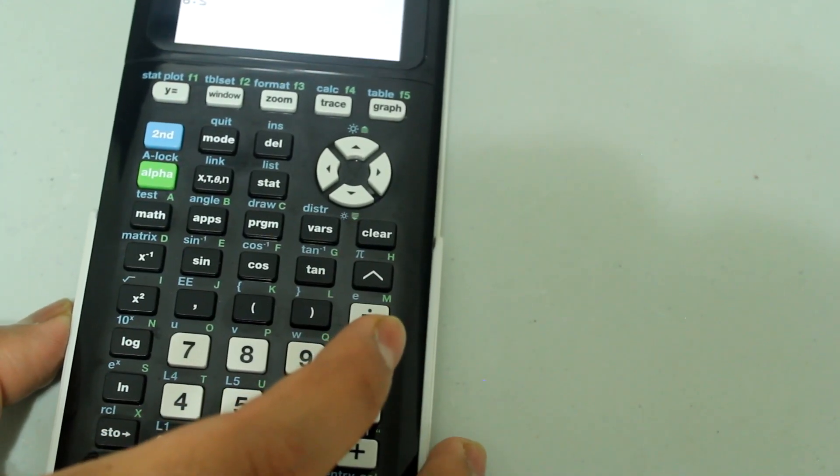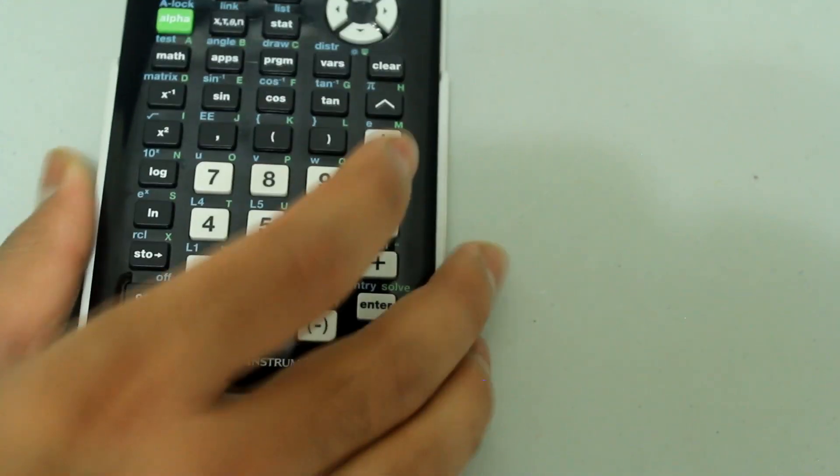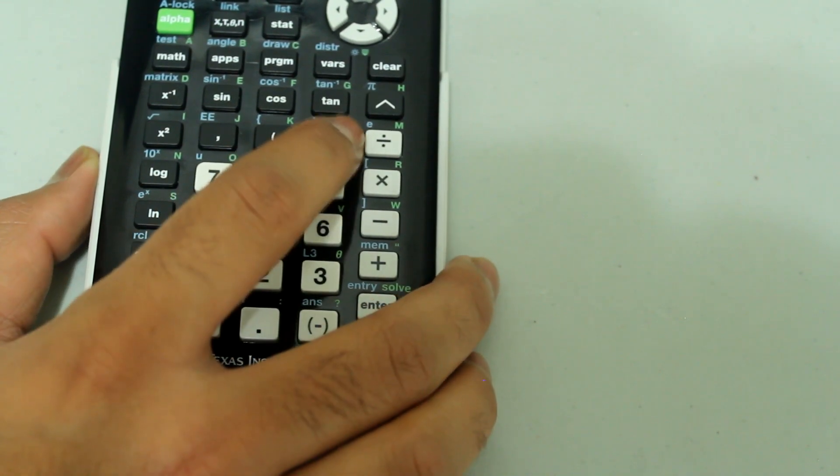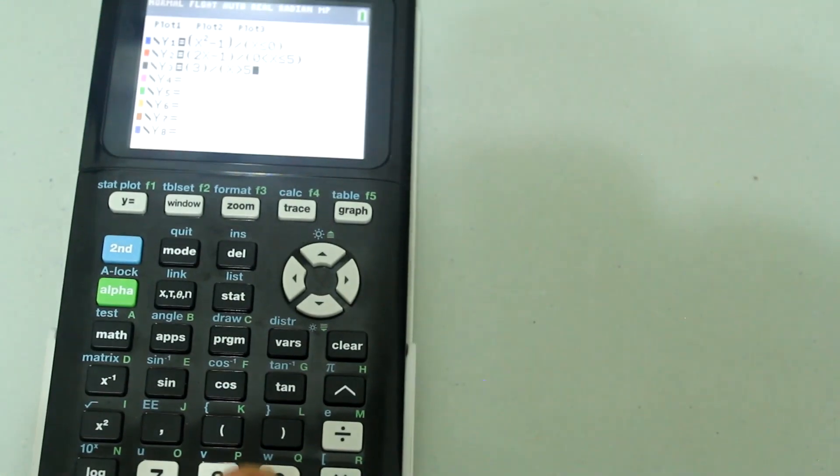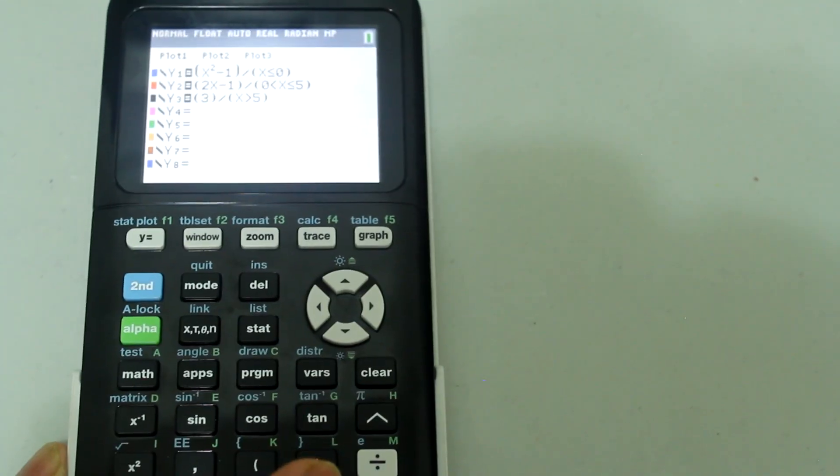Open another parenthesis and type in x and then 2nd math, press number 3. Number 5. And this is what I have on the screen so far.